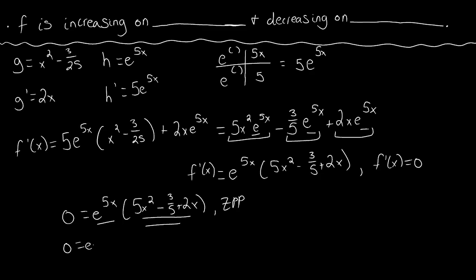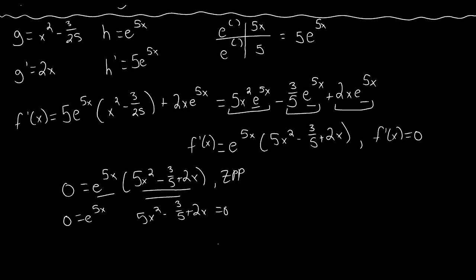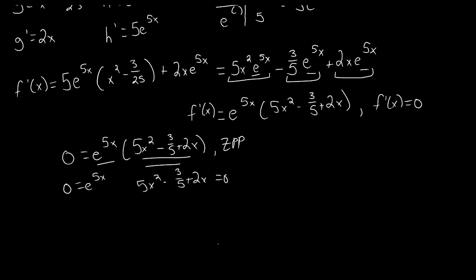So we get 0 equals e to the 5x, and 5x squared minus 3 fifths plus 2x equals 0. Setting e to the 5x equal to 0 really doesn't have a solution — there's no x value we can plug in to make it return 0. By the nature of the exponential function, as x grows large in the negative direction it approaches the x-axis but never actually reaches 0. So there's no solution from that factor to worry about.